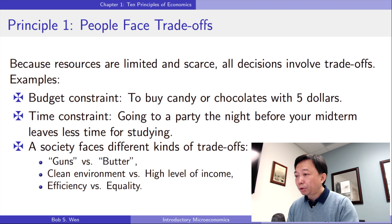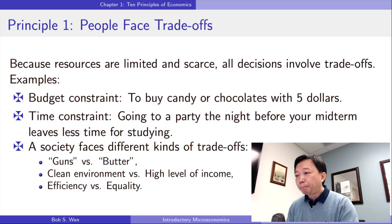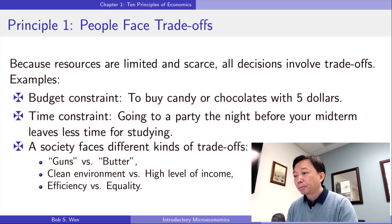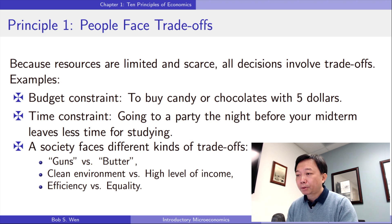A society faces three types of trade-offs. The first type is between guns and butter. Guns stands for national defense, and butter stands for consumer goods. The more a society spends on national defense to protect its people, the less it can spend on consumer goods to raise its people's standard of living.